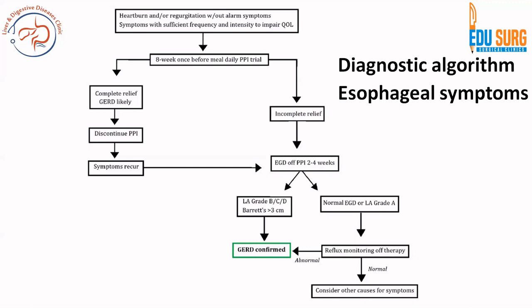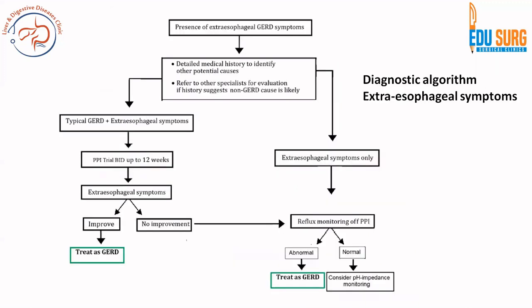If the endoscopy is normal, perform pH monitoring or impedance pH monitoring. If that is also normal, rule out other causes with imaging studies — ultrasound of the abdomen and if necessary barium swallow or upper GI contrast study. This is how a patient with typical reflux syndrome is analyzed. Remember: eight weeks of optimized PPI therapy is the first step in managing these patients.